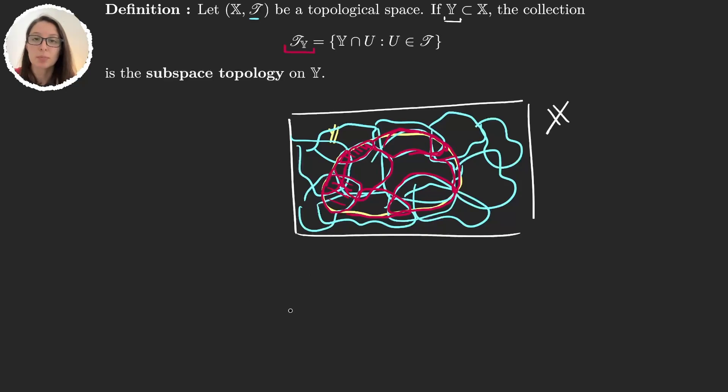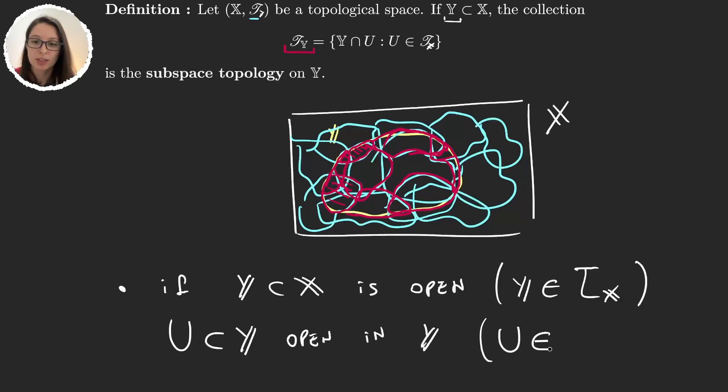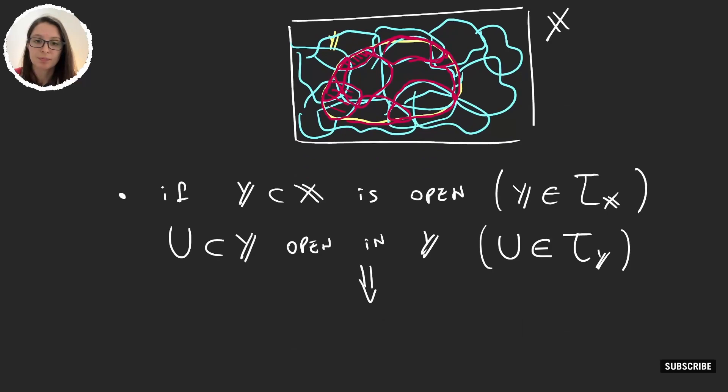Before jumping into the examples, let's see a few properties. These are two properties, very simple. Suppose that Y is an open subset of X. Being open in X means that Y is an element of the X topology. And I grab you a subset U of Y that's open in Y. So open in Y means that U is a subset of this subspace topology in Y. If we have this, then U is also open in X.